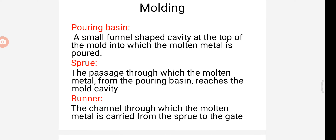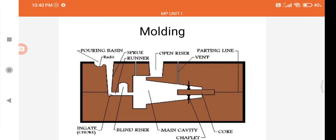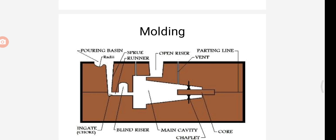Next we are going to see about the pouring basin. The pouring basin is a small funnel-shaped cavity at the top of the mold into which the molten material is poured. It is just like a funnel at the top — we pour the molten metals into this pouring basin. Next is the sprue — it is the passage through which the molten material from the pouring basin reaches the mold cavity. In many cases it controls the flow of metal into the mold.